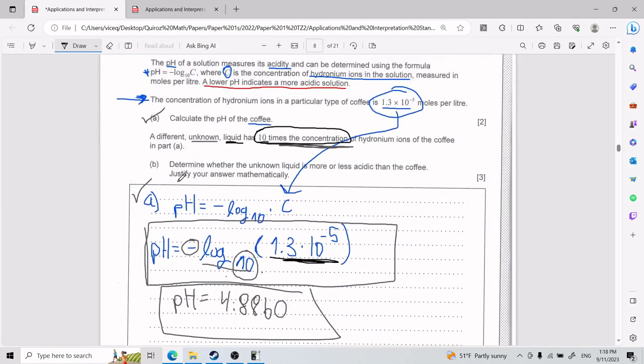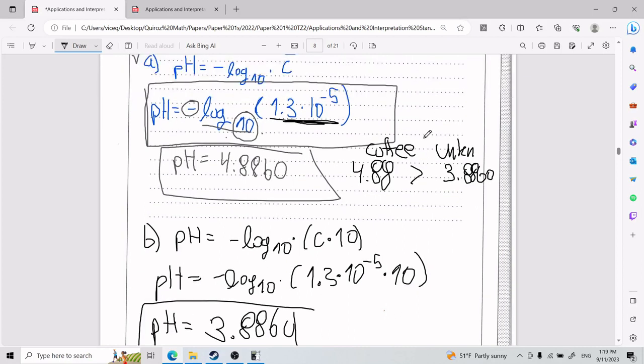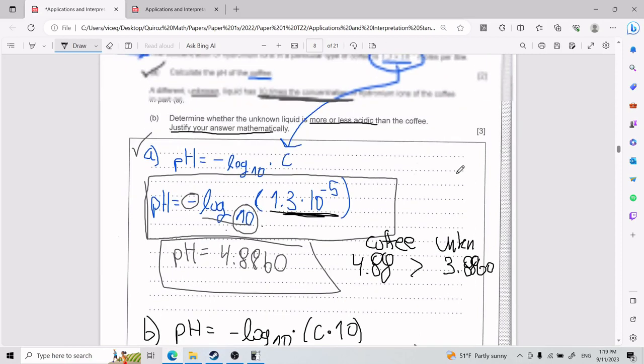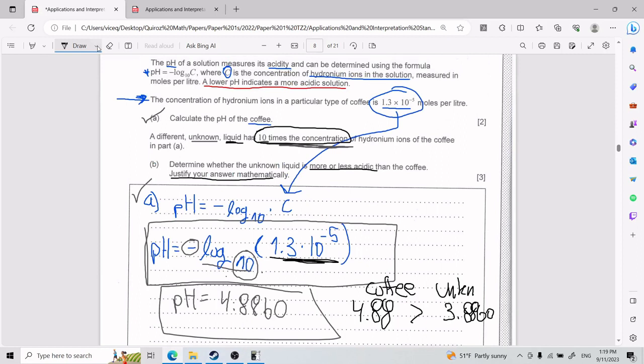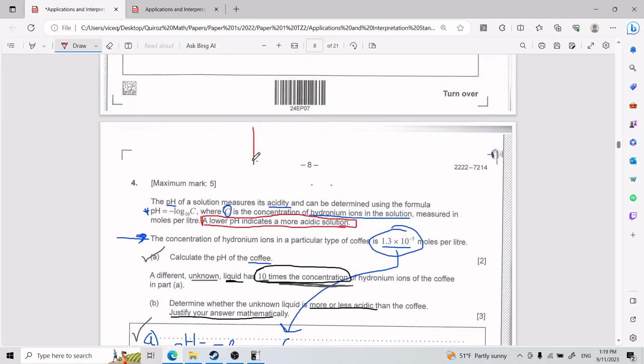And from here, they're asking us to justify mathematically which is more or less acidic. And so a lot of people here would simply say, oh, the answer in part A is bigger, right? So 4.88, which is the coffee, is bigger than the unknown, which is 3.8860. And they would just say, oh, okay, so that means the coffee is more acidic. Boom. I'm over, right? Now that's a common trap. And it has to do with you knowing well how to read acidic levels, how to read pH. And as you see what I put in red here, okay, it says that a lower pH indicates a more acidic solution. So if your pH is lower, that means it is more acidic.